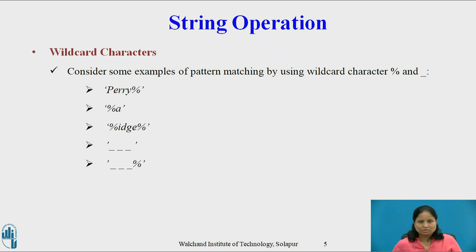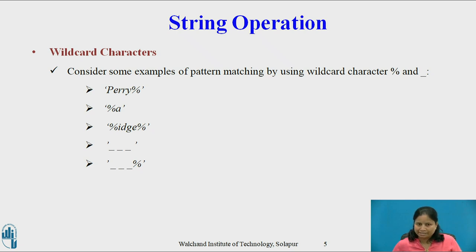Consider some examples of pattern matching using wildcard characters % and underscore. 'Peri%' matches any string beginning with 'peri'. '%A' finds any values that end with 'A'. '%idge%' matches any string containing 'idge' as a substring. '3_' matches any string of exactly 3 characters. '3_%' matches any string of at least 3 characters. These patterns are case sensitive — uppercase characters do not match lowercase characters or vice versa.